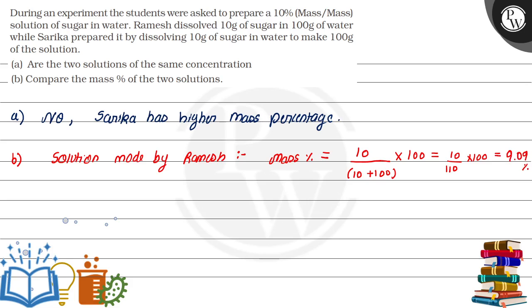So it's 9.09 percent. This is the solution Ramesh made, which is not what was required. We should have had 10%, as prepared by Sarika.